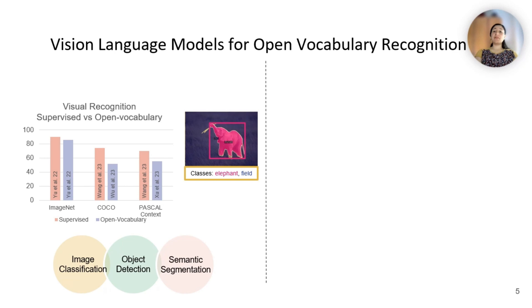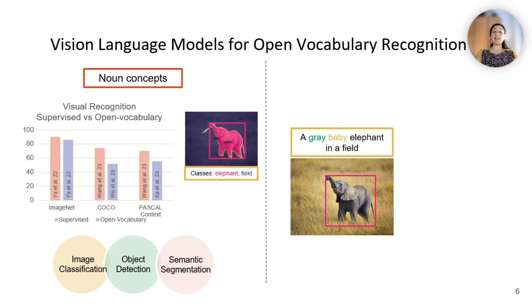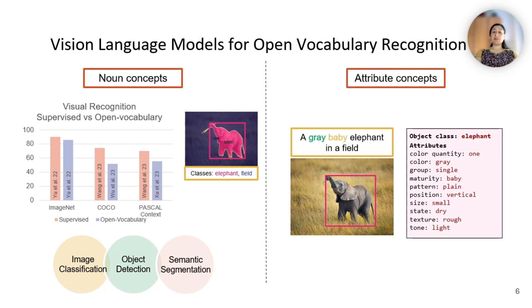However, most of these methods primarily focus on noun concepts, leaving behind research on fine-grained details. Research on attribute detection within language models remains limited and unexplored. Attributes offer rich information about visual elements that go beyond simple object recognition. By detecting and recognizing attributes, computer vision systems can capture and represent a wide range of visual characteristics, such as color, texture, pose, and state, leading to a more comprehensive and descriptive understanding of visual content.